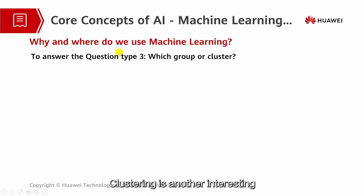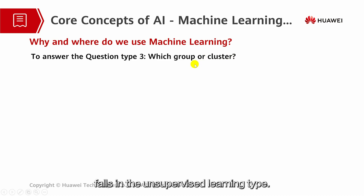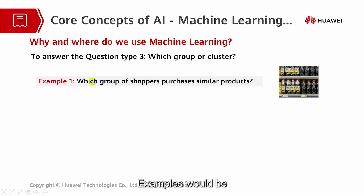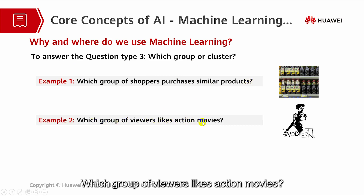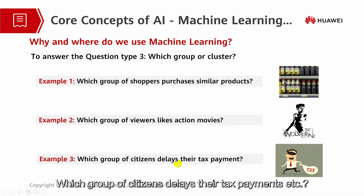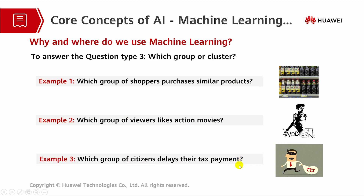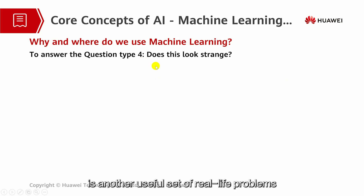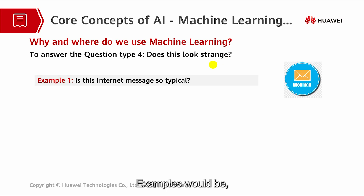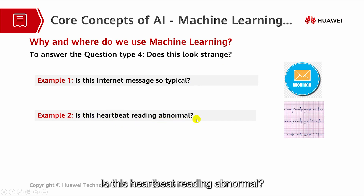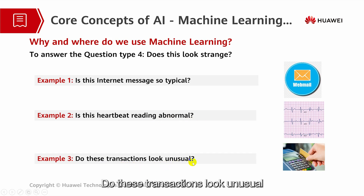Clustering is another interesting type of machine learning problem, which falls in the unsupervised learning type. Examples would be: which group of shoppers purchases similar products? Which group of viewers likes action movies? Which group of citizens delays their tax payment? Anomaly detection is another useful set of real-life problems. Examples would be: is this internet message atypical? Is this heartbeat reading abnormal? Do these transactions look unusual compared to the customer's usual credit card transactions?